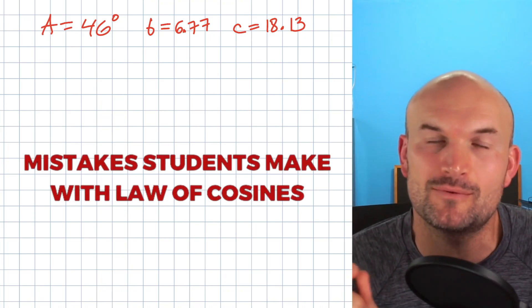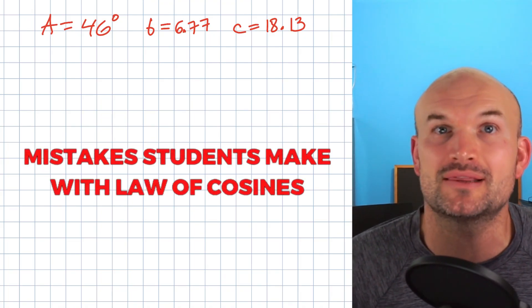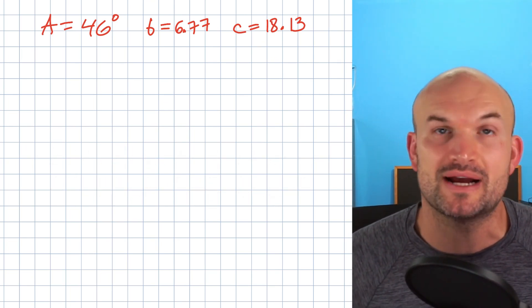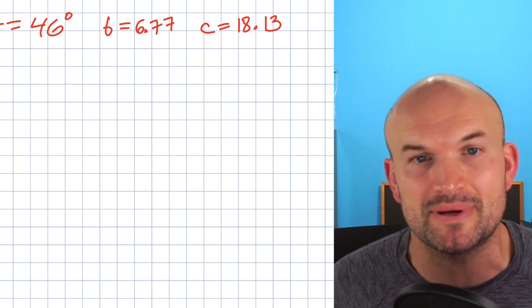All right guys, in this example, what I want to do is highlight one of the mistakes students make with law of cosines. Now, we know that the law of sines brings in the ambiguous case, right? And that's usually where a lot of mistakes happen.